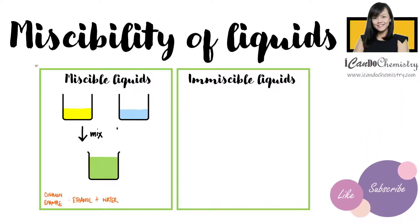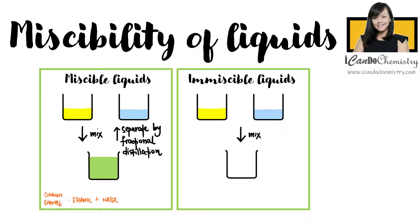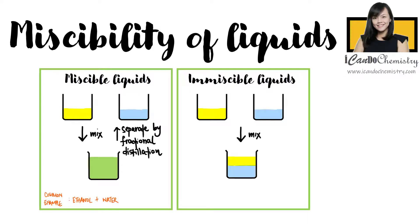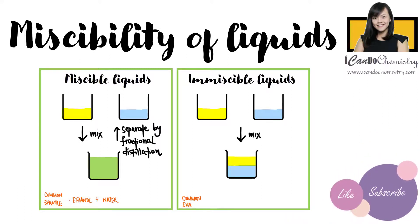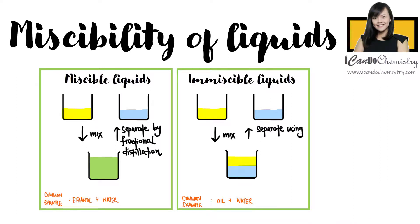A mixture of miscible liquids can be separated by fractional distillation. When the liquids do not mix to form a solution, they are immiscible. When the two liquids are mixed together, they appear to form an emulsion. When we allow the mixture to rest, the emulsion eventually separates into distinct layers of liquids. One very common example of immiscible liquids is the mixture of oil and water. A mixture of immiscible liquids can be separated using a separating funnel.